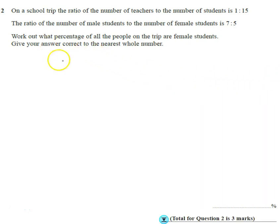Okay, so we're given quite a lot of information here. Question 2, this is a calculator paper. For staff on the school trip, the ratio of teachers to students is 1 to 15.